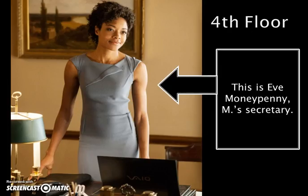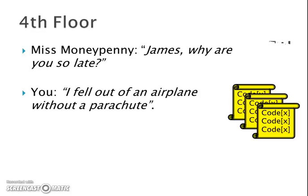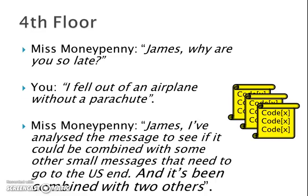This is Eve Moneypenny, M's secretary. She says: James, why were you so late? You reply: I fell out of a plane without a parachute. She continues: I've analysed the message to see if it could be combined with other small messages that are needed at the US end, and it's been combined with two others.